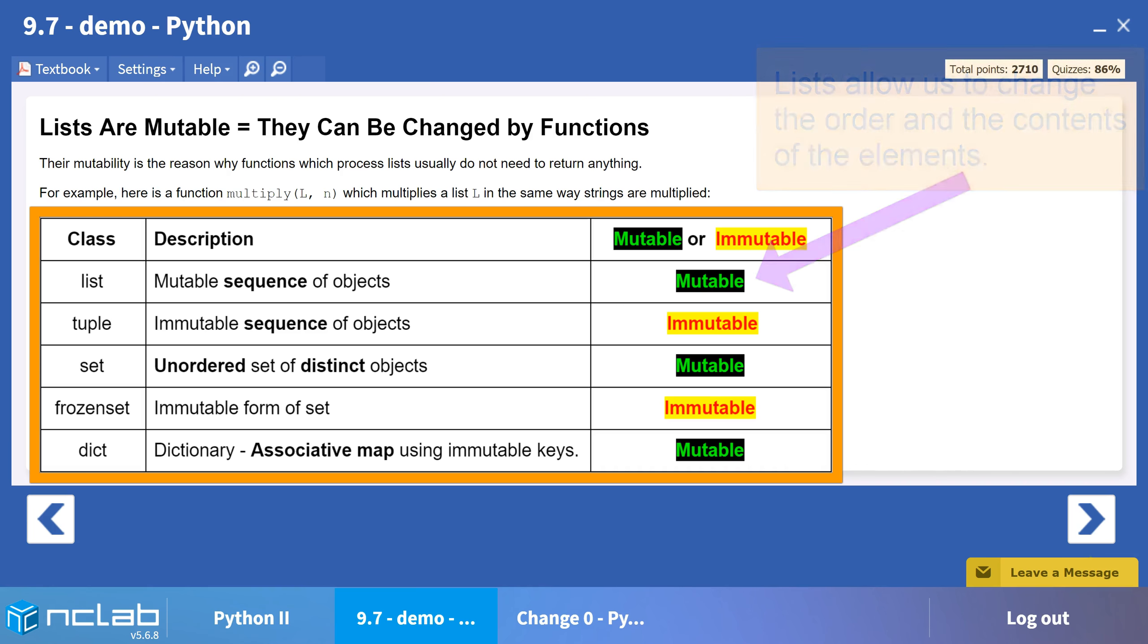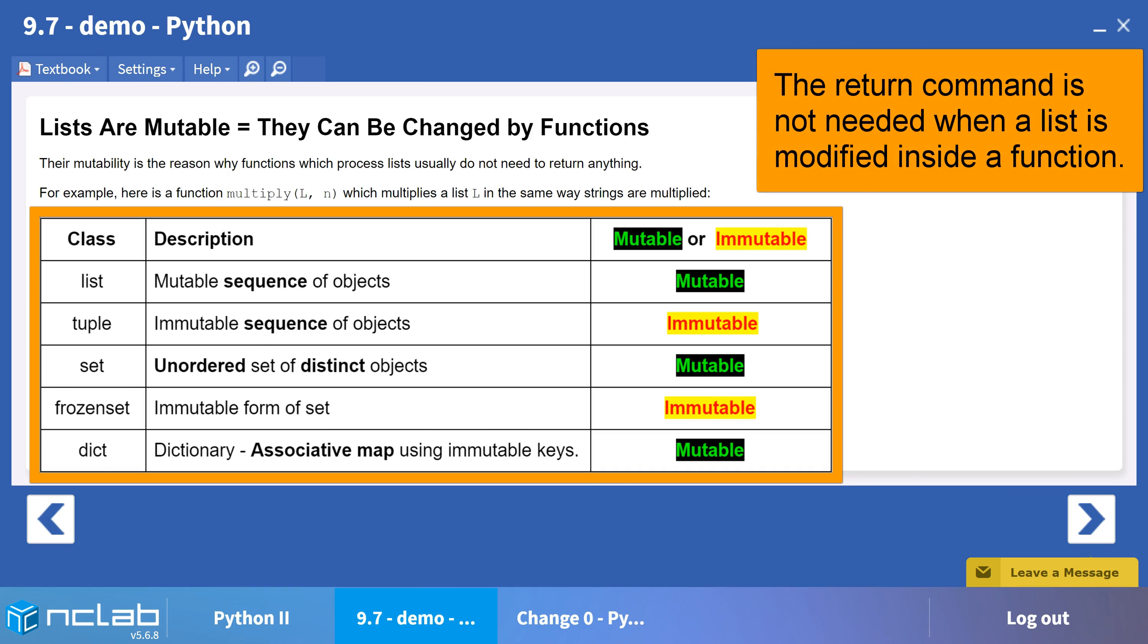Because lists are mutable, we can directly change them with a function while returning nothing. We have seen this with our list functions rotate and reverse in the previous sections.